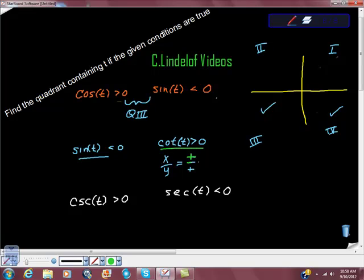So it would be positive over a positive. In quadrant one, quadrant one is the positive, positive quadrant, so it could be there. Or it could be in the negative quadrant. So it could be here or here. So again, we're in quadrant three.